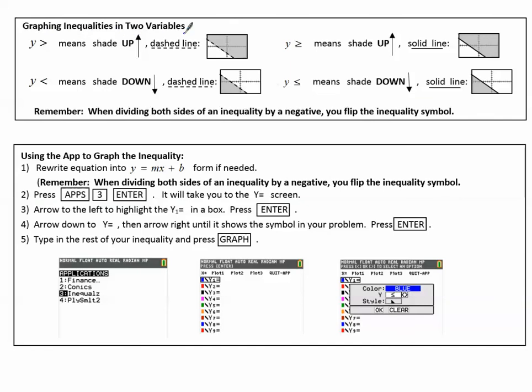Graphing inequalities in two variables, it's helpful to know how to graph a line by getting the y by itself and thinking of y equals mx plus b. We remember that y is greater than means shade up, y is less than means shade down, and these two are with dashed lines. When it's greater than or equal to, we shade up, but it's a solid line. Less than or equal to, we shade down, and it's a solid line. So the equal to's get the solid lines. Remember, when dividing both sides of an inequality by a negative, you flip the inequality symbol.